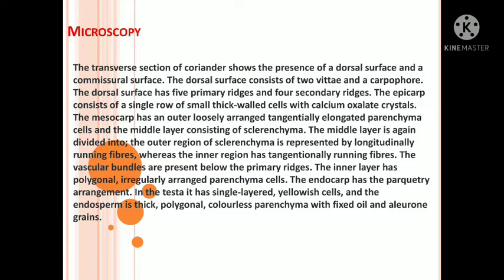As it is a fruit, so it has Epicarp, Mesocarp and Endocarp. When we take the transverse section of coriander, it shows on the dorsal surface 2 Vitae and Carpophore. On the other side, it shows 5 primary ridges and 4 secondary ridges in the Epicarp region. In the Endosperm, it shows volatile oil glands, Calcium Oxalate Crystals, and also the Carpophore attachment.